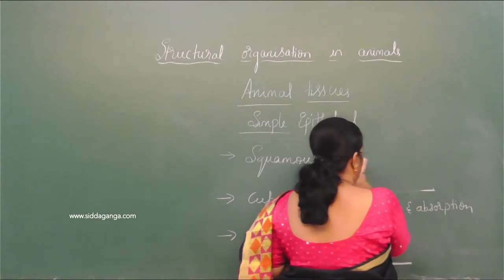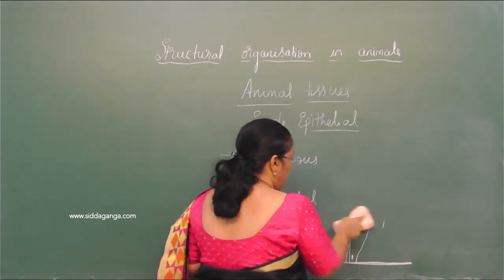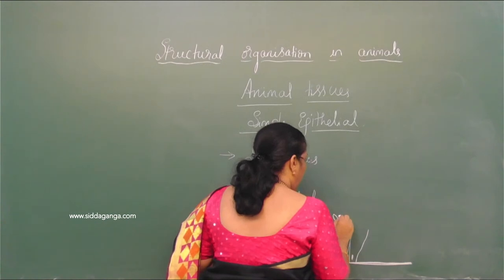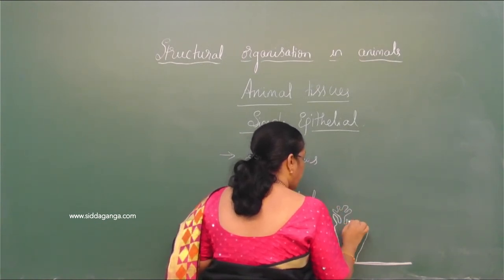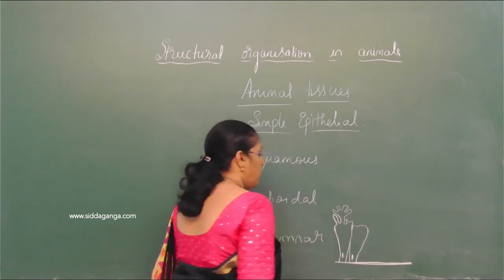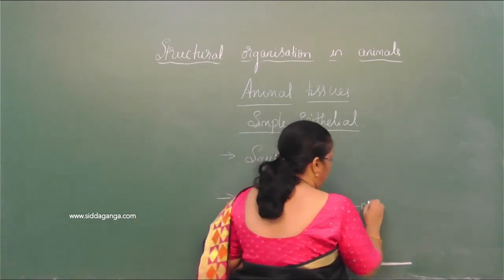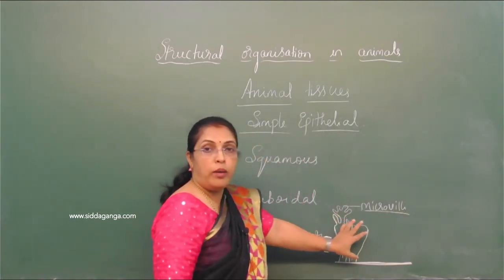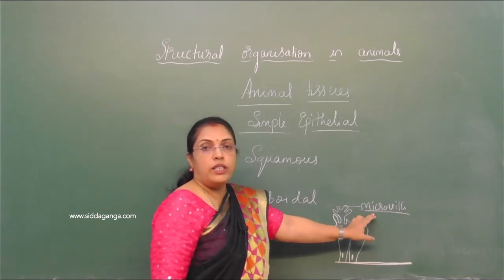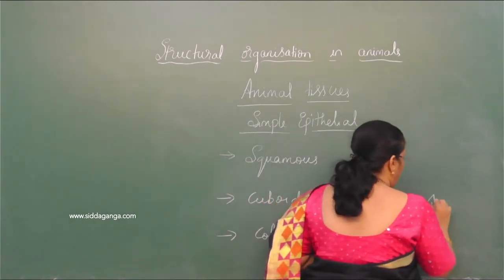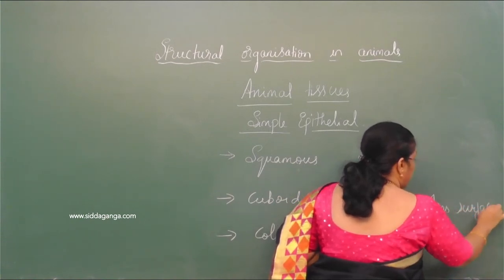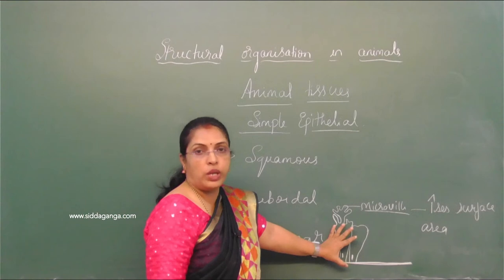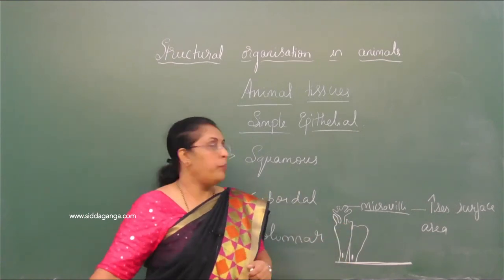When the upper surface of columnar epithelium is modified into villi and microvilli, the main function is absorption. This modification is seen in the small intestine, where microvilli increase the surface area to allow maximum absorption of digested food.